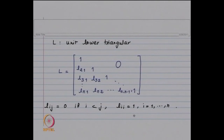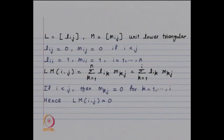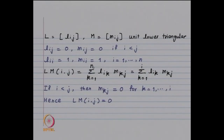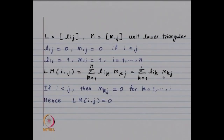Matrix M is going to have a similar form. Now we look at the product L times M. We have L_{ij} = 0 and M_{ij} = 0 if i < j, and L_{ii} = M_{ii} = 1 for i going from 1 to n. The (i,j)-th element of matrix LM, denoted (LM)_{ij}, by definition of matrix multiplication is given by the summation of L_{ik} M_{kj} for k going from 1 to n. Using the fact that L_{ij} = 0 if i < j, this reduces to the summation k = 1 to i of L_{ik} M_{kj}.